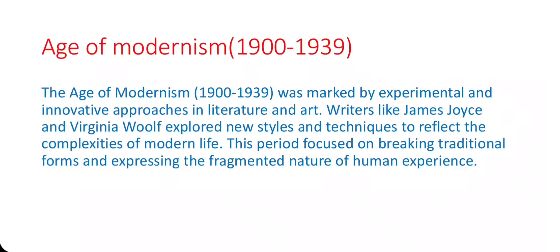As we move into the 20th century, we encounter the Age of Modernism from 1900 to 1939. This period was marked by a break from traditional forms and the exploration of new techniques and themes. Writers like James Joyce and Virginia Woolf revolutionized literature with works like Ulysses and Mrs. Dalloway. The modernists sought to capture the fragmented reality of the modern world.